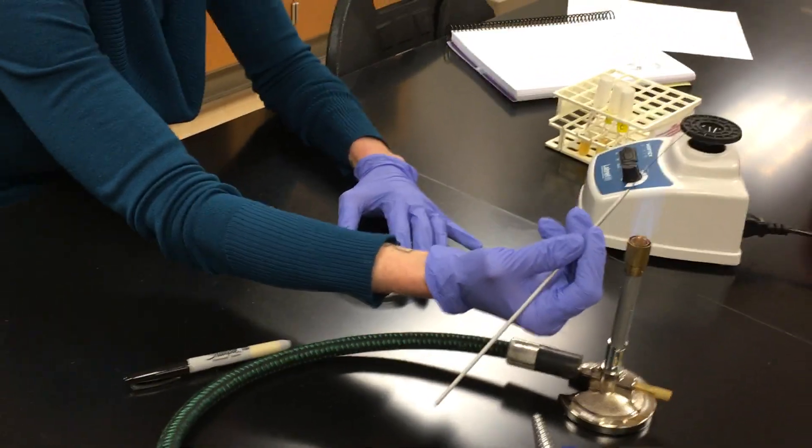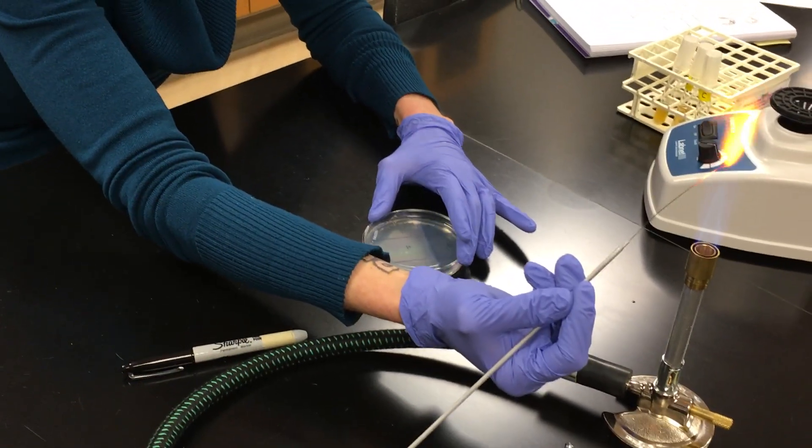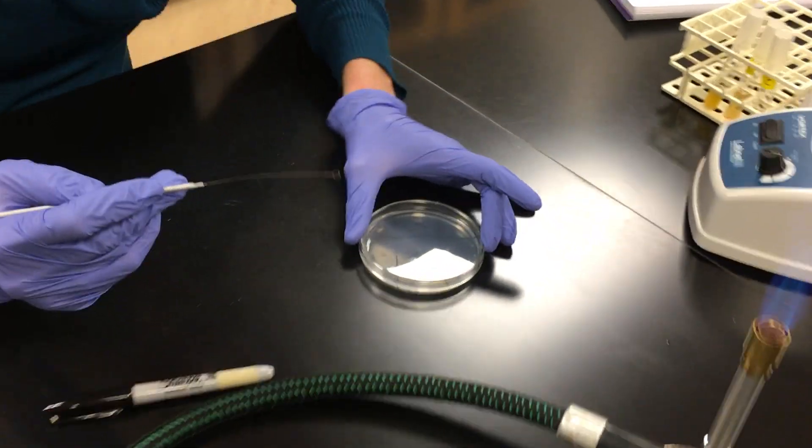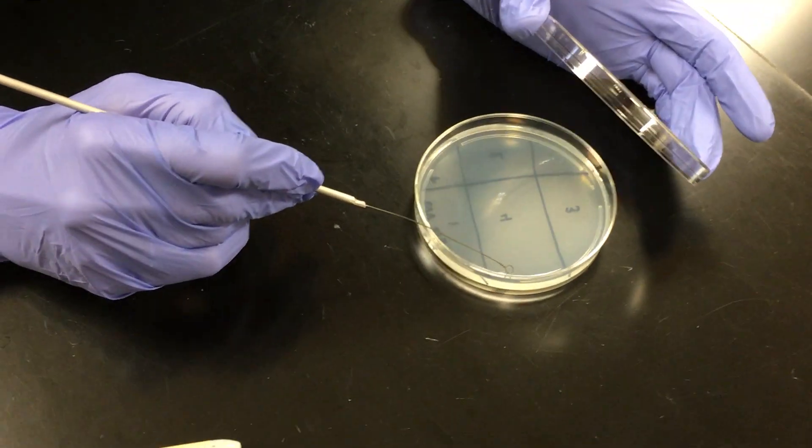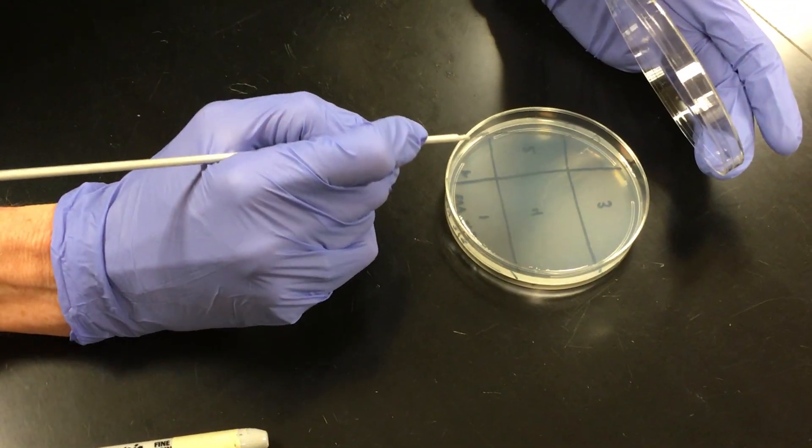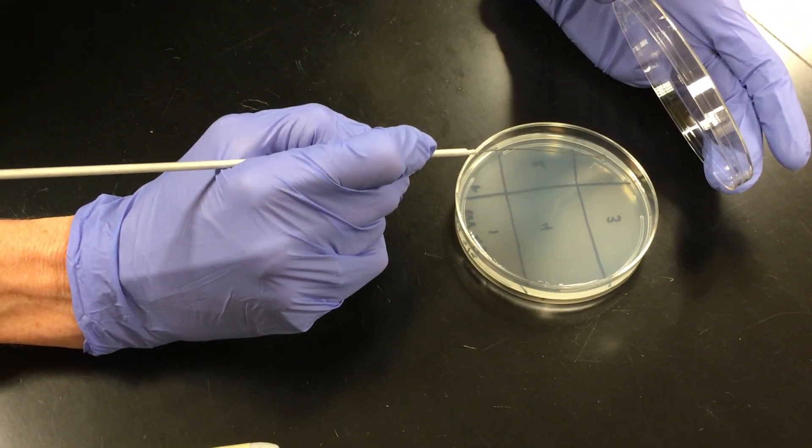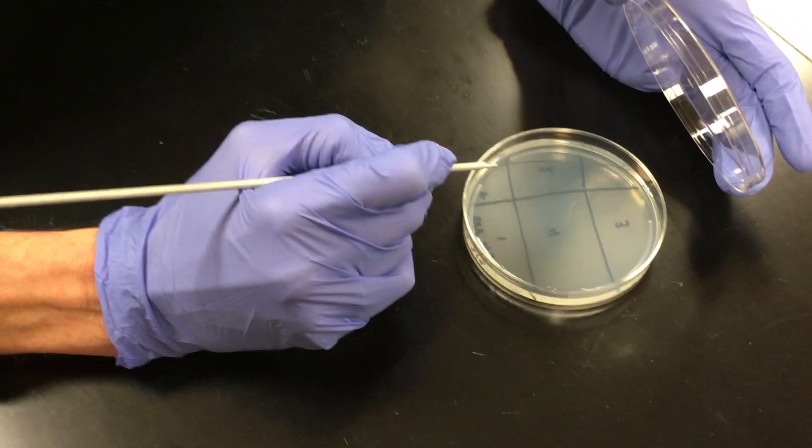You're going to reflame. Turn your plate. So you're looking at number three and this is hot. Remember, so make a little sizzle spot over here in four this time, close to the edge. Now I'm going to go into the, I'm going to cross into quadrant two as I'm streaking across quadrant three.